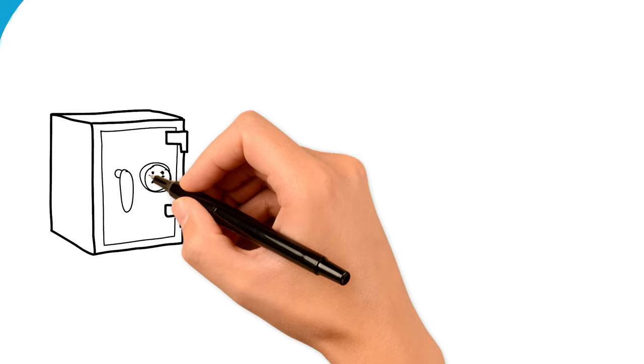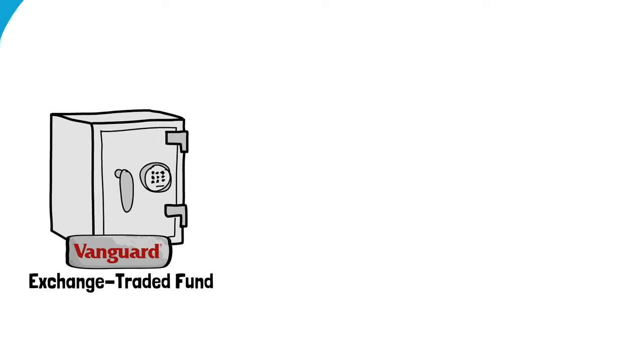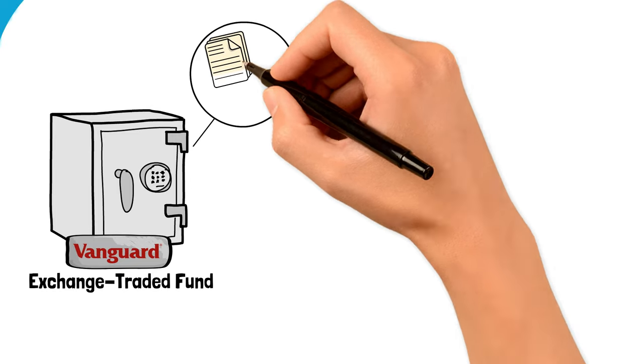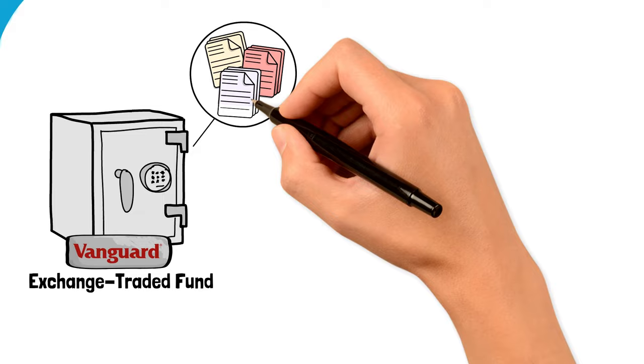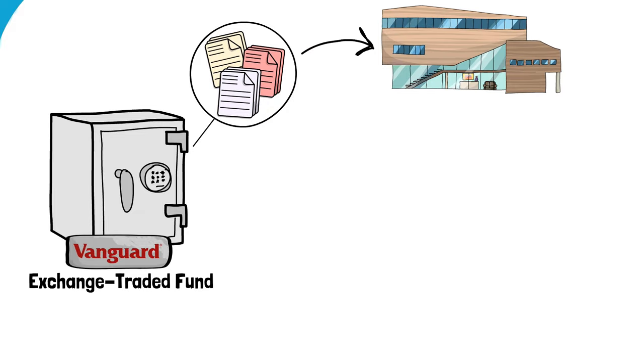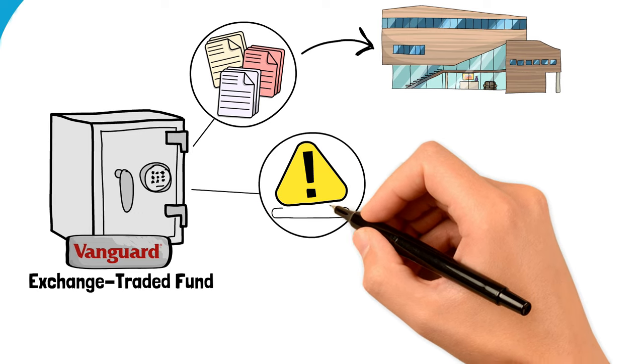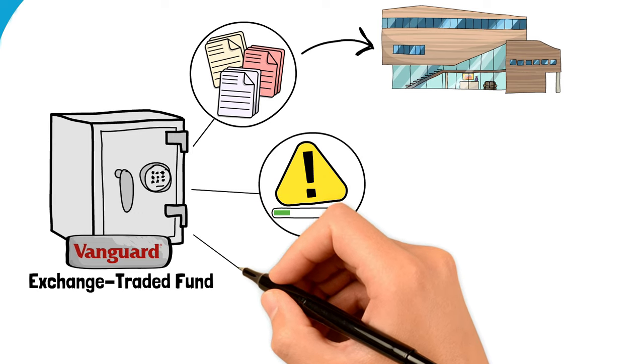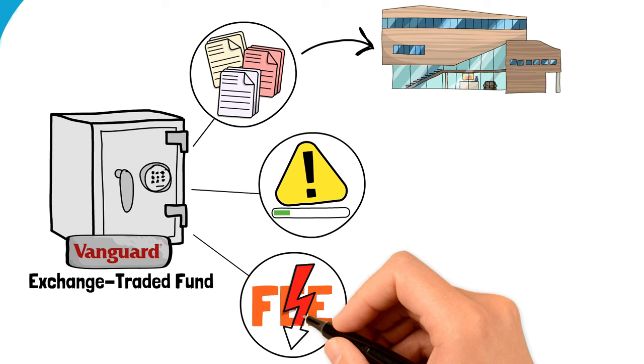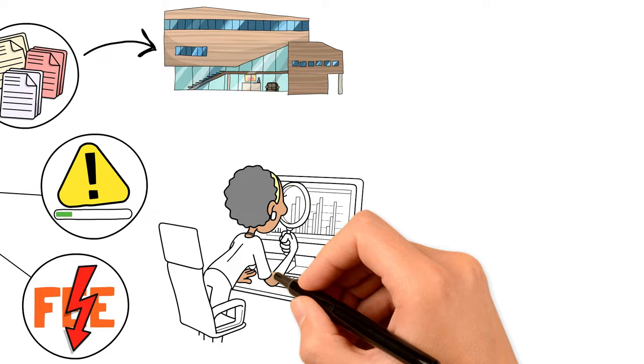ETFs, or exchange-traded funds, are like baskets of stocks or bonds that you can buy and sell on the stock market just like individual stocks. They're popular because they offer a simple way to invest in many companies at once, spreading out your risk. Plus, they're known for having lower fees than traditional mutual funds.